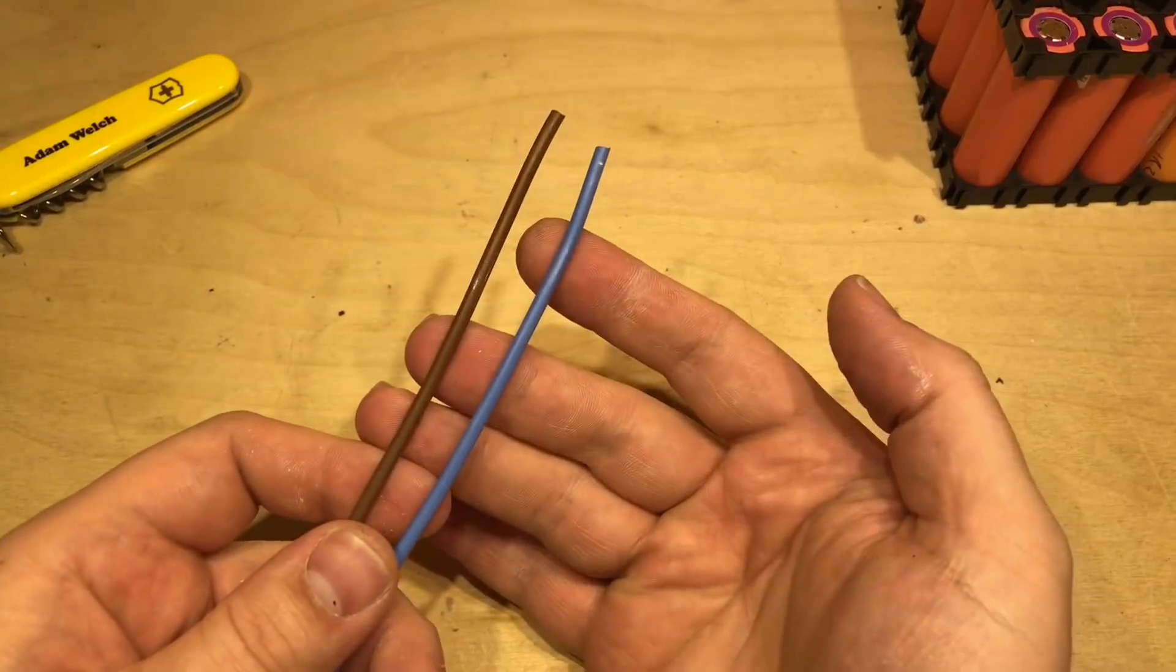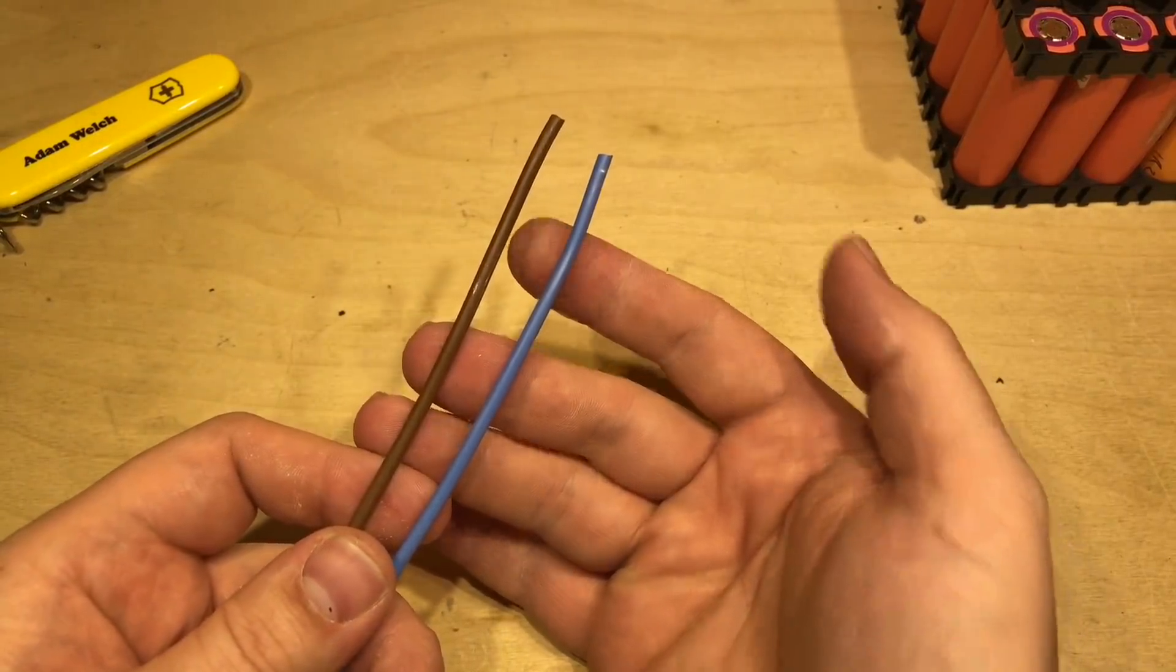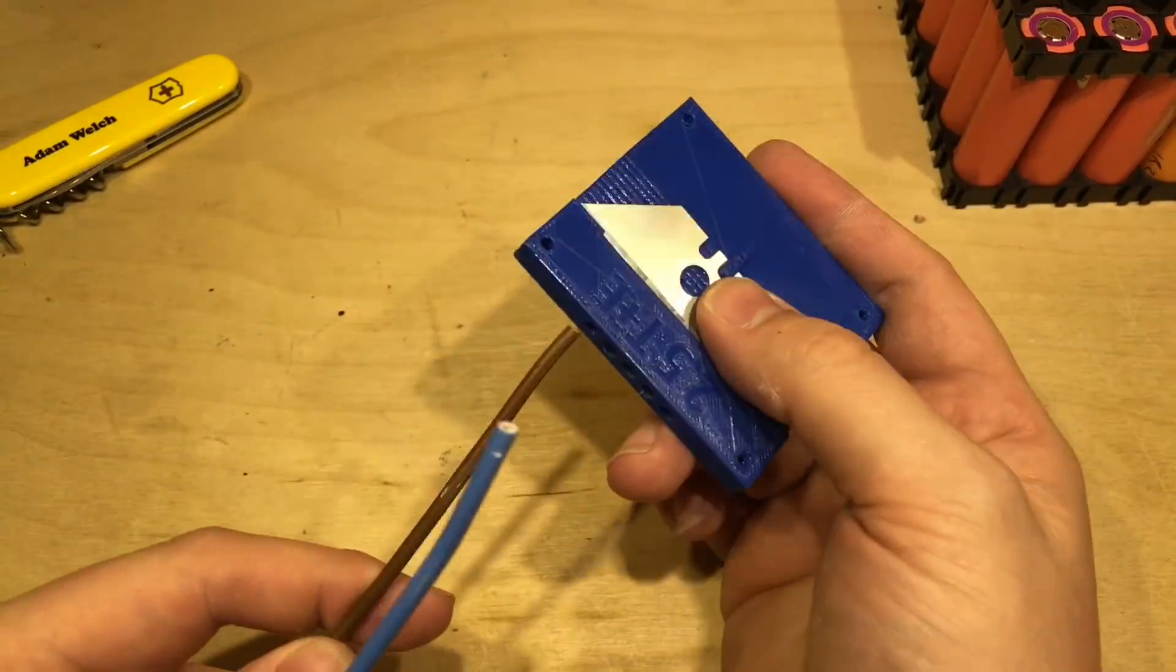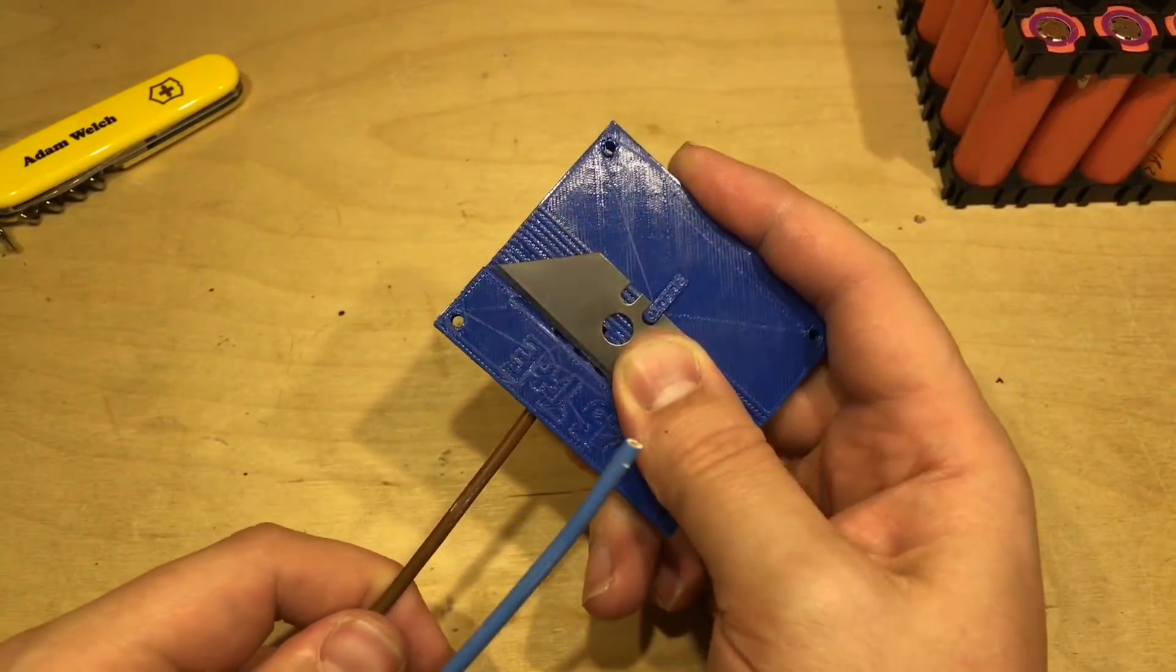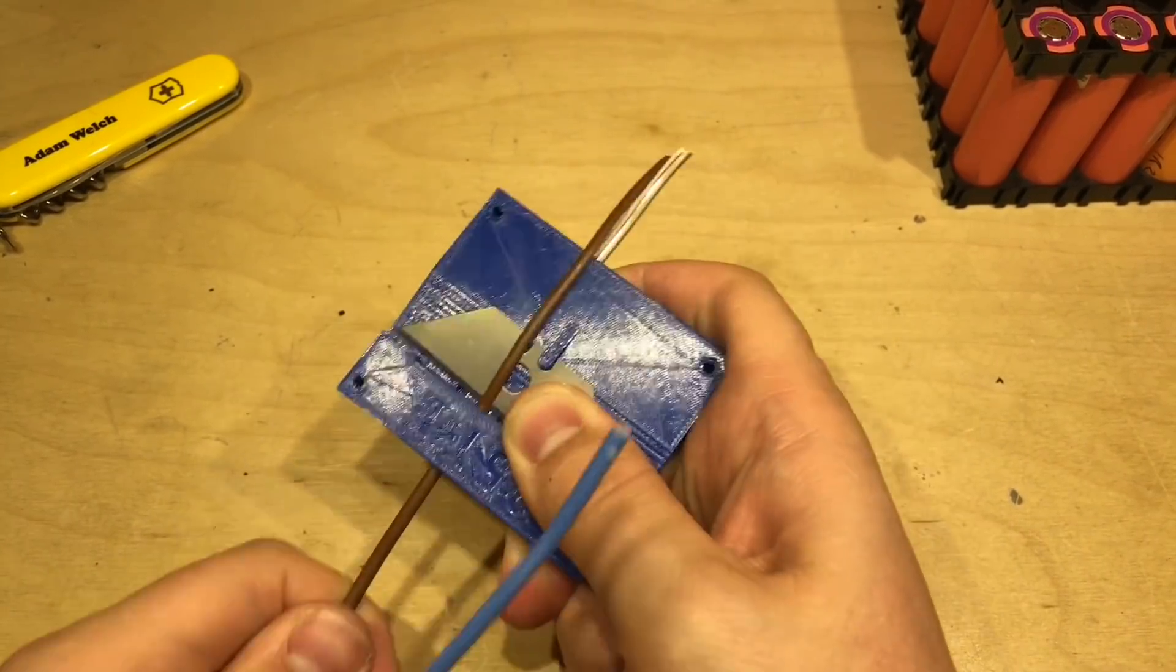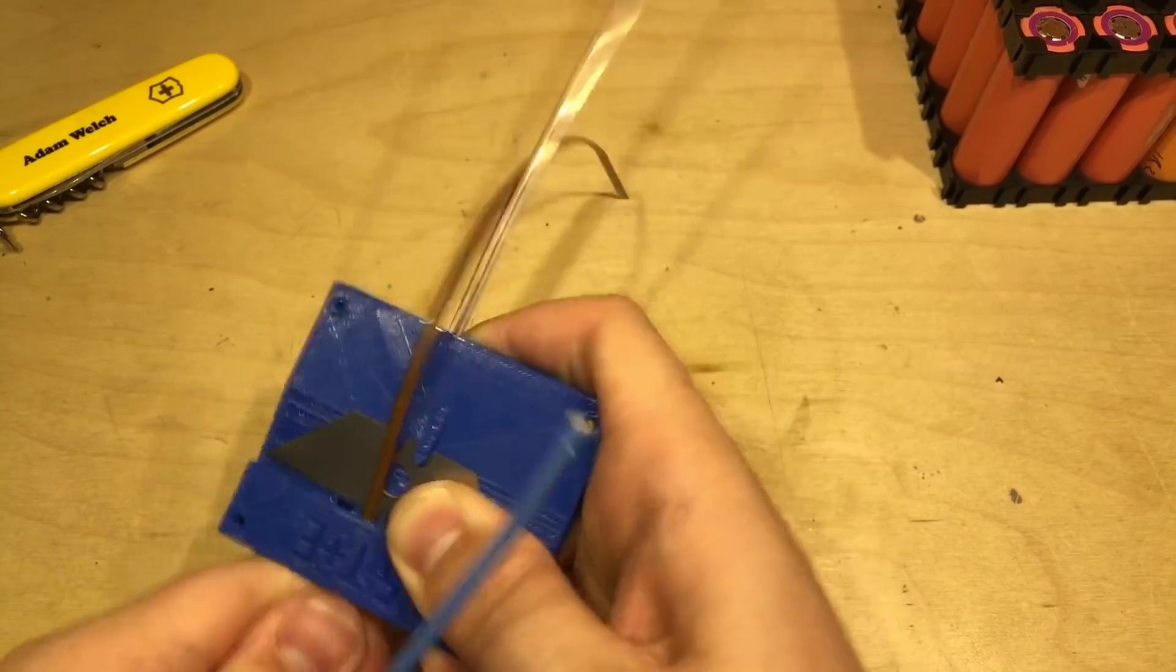Now with the two cores removed from the outer insulation, I can strip these. I've shown in a previous video, I came up with this 3D printed device to strip the cable and this has been an absolute godsend.